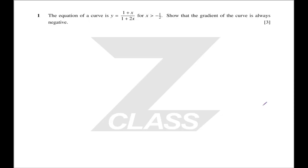Question 1: we have the equation for a curve, given x is greater than certain values. Show that the gradient of the curve is always negative. Ultimately, what we are looking for here is just how to differentiate using the quotient rule — that's what they call it — i.e. how to differentiate a fraction.